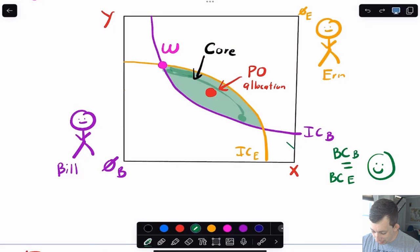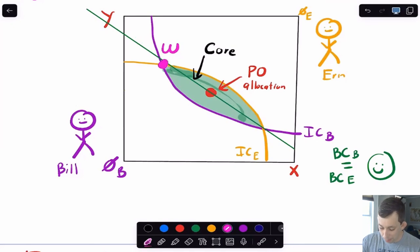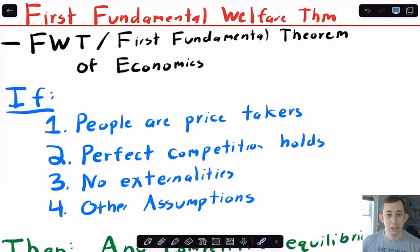The crux of how this works is that we need to add prices to the Edgeworth box, which means adding a budget constraint. The budget constraint is going to be the same for both Bill and Aaron because they face the same prices. It's going to go through their endowment because both of them need to be able to afford their endowment, and there's only going to be one budget constraint on the Edgeworth box.